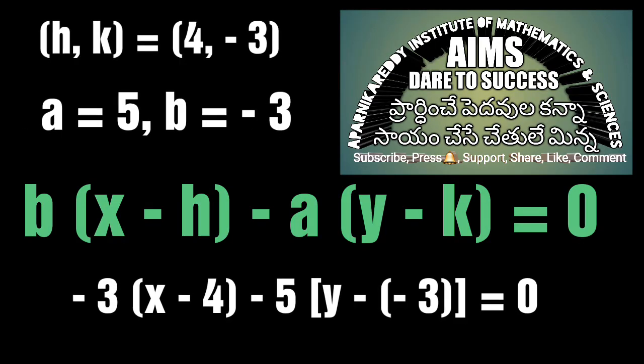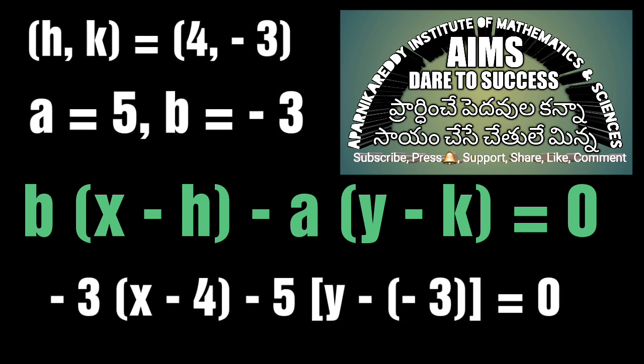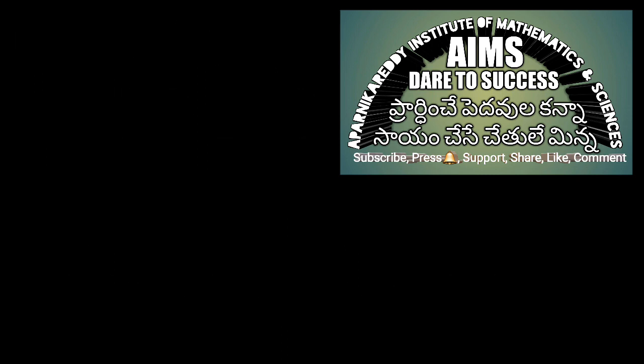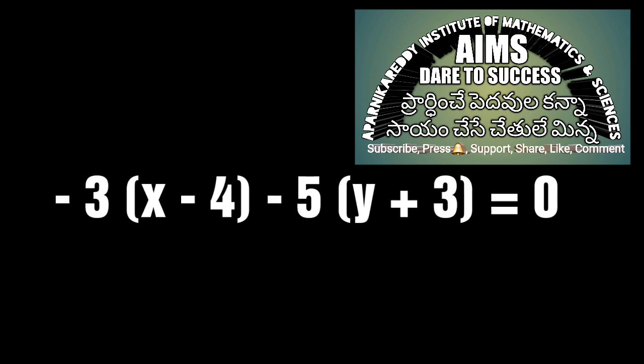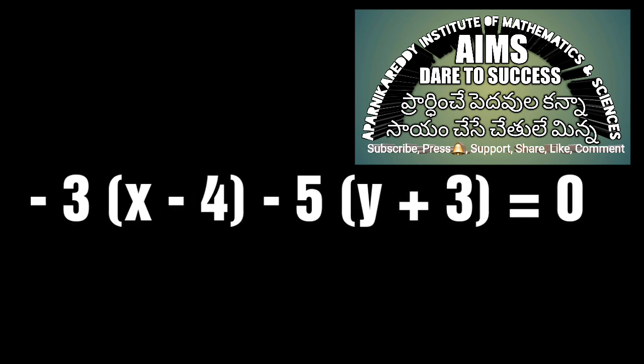Substitute all values into b(x - h) - a(y - k) = 0. We get -3(x - 4) - 5(y - (-3)) = 0, which simplifies to -3(x - 4) - 5(y + 3) = 0.